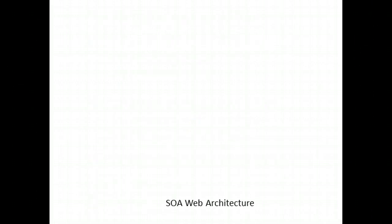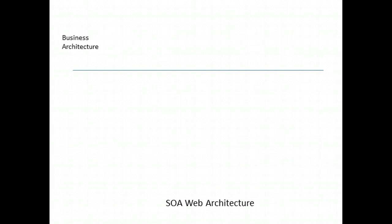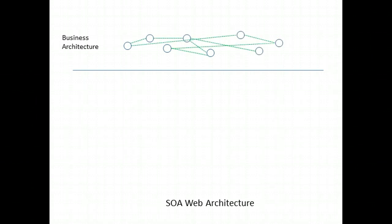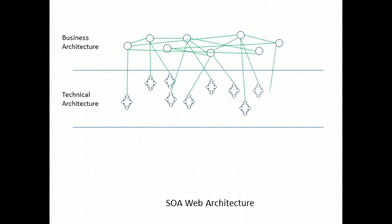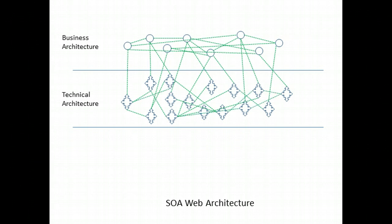Before we look at the snowman architecture, let's look at the standard architectural approach to large IT systems. We start by understanding the business architecture we need to support — identifying the business functions and understanding the interrelationships between them. Next, we design a technical architecture. Typically, this is an interrelated web of services. Our goal is to ensure that all of the requirements identified in the business analysis are delivered by some collection of services.